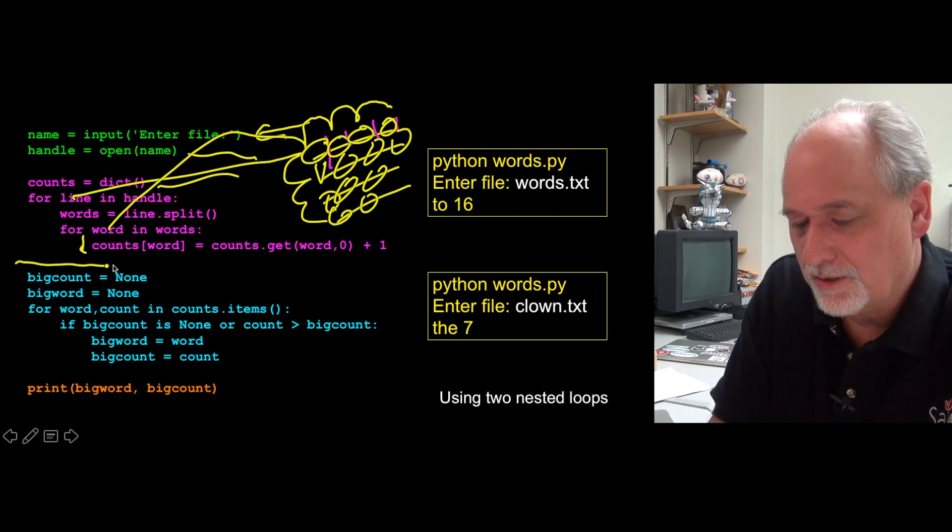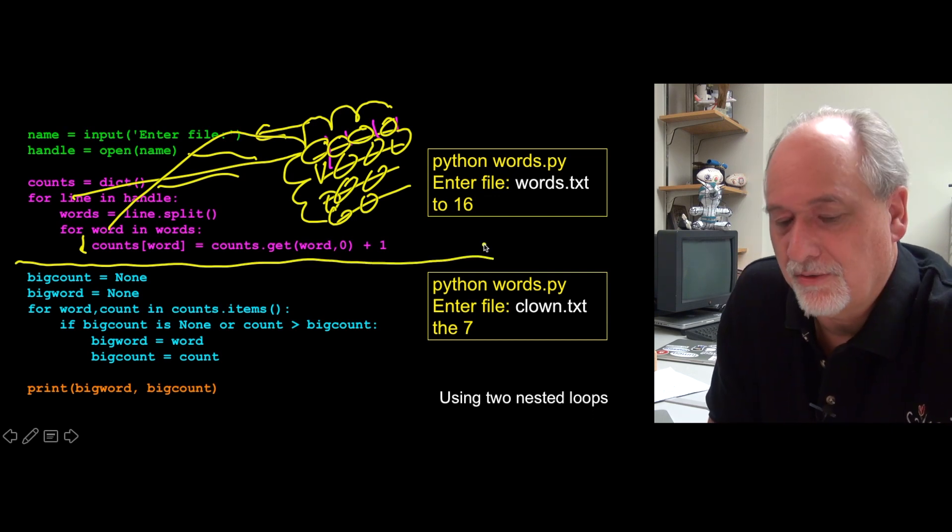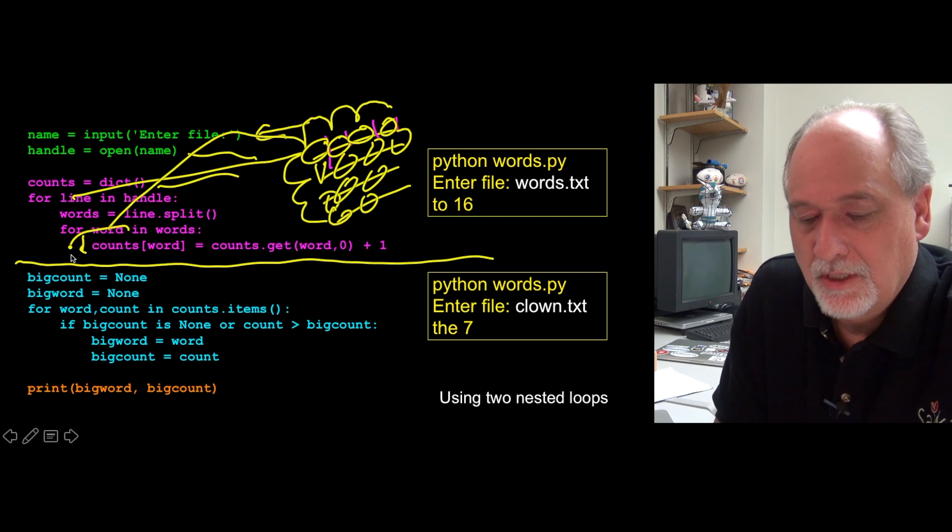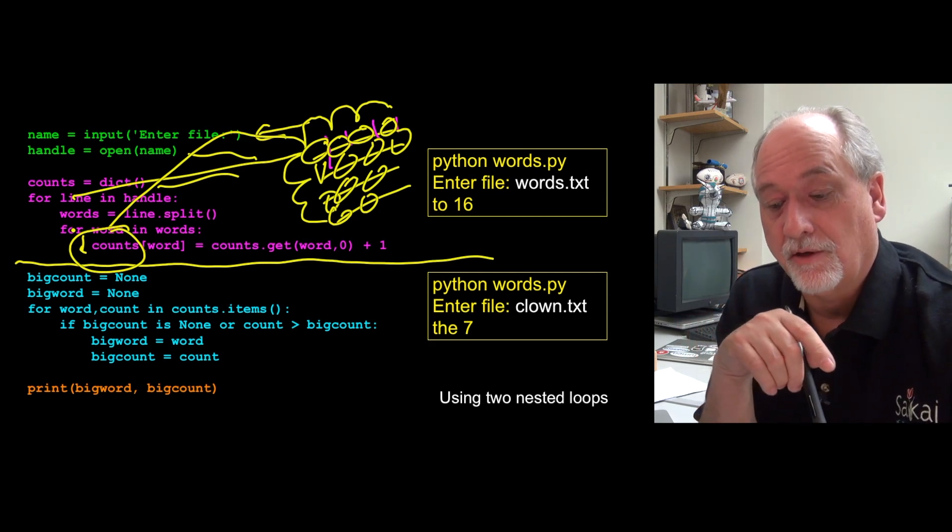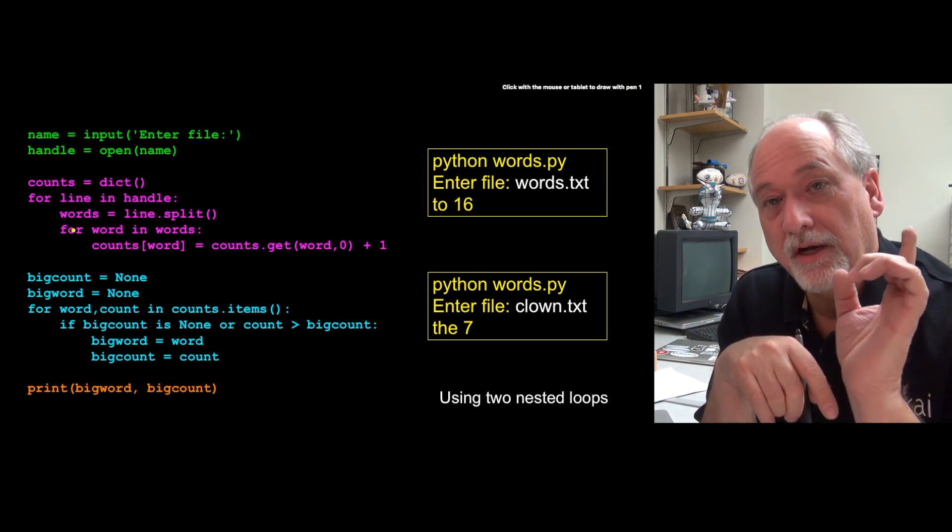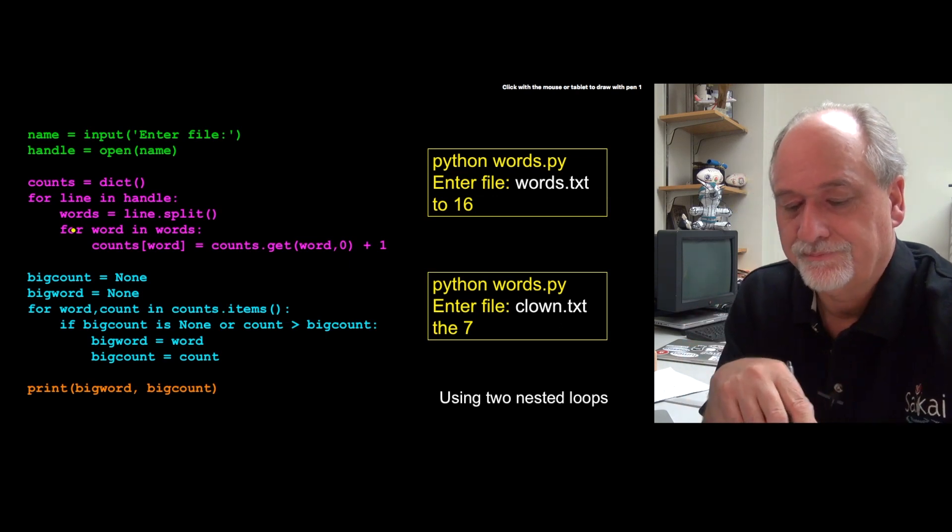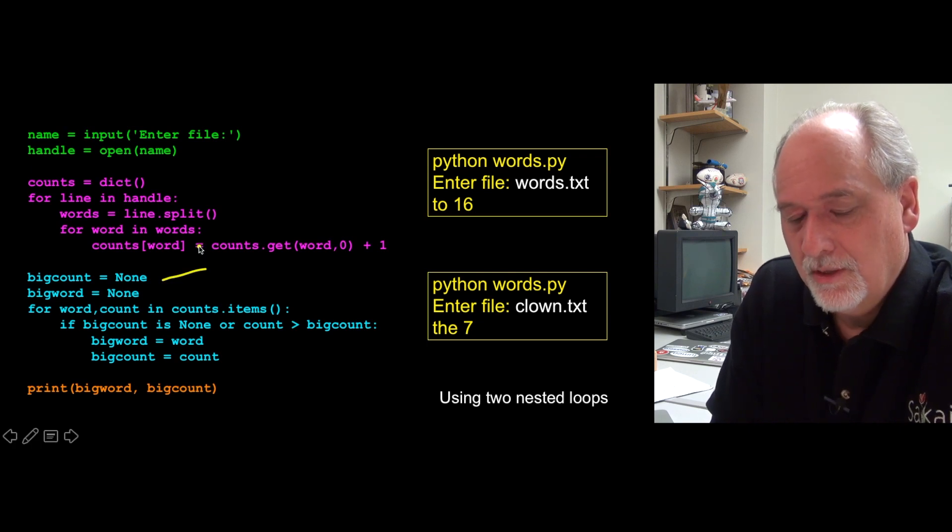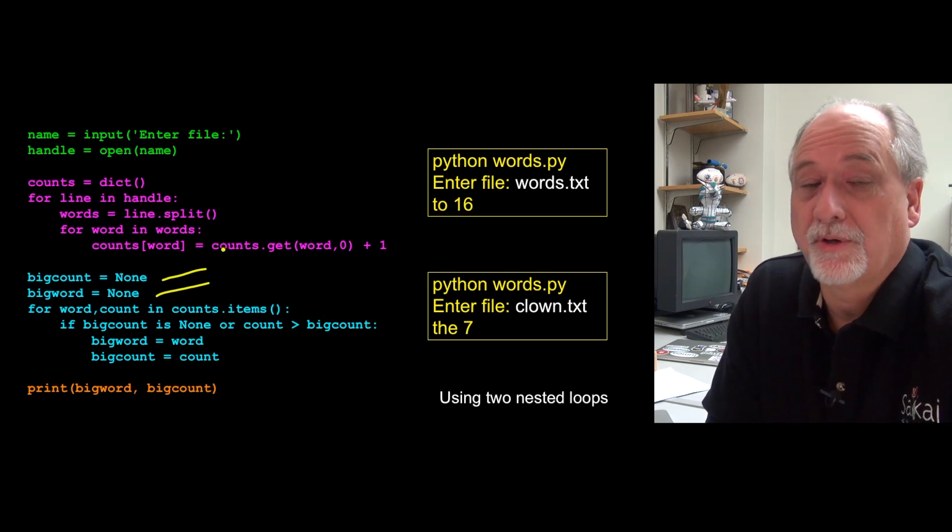At this point in the code, and it's important to be able to draw these lines. At this point in the code, you have the histogram. And it's in the variable counts. Now, we want to find the largest one. Now we have written loops that can find the largest in a list. But now we want to find the largest value in the key value pairs of a dictionary. So we're going to start with, we're going to know what the largest count is. And the largest word has that count. And we're going to set them both to none. Because we're going to prime our loop.